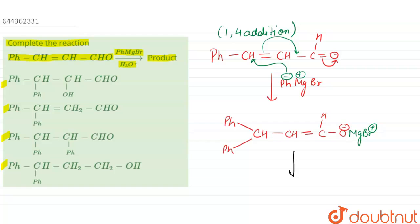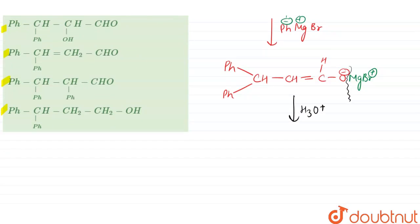Now acid hydrolysis will take place with H₃O⁺. In acid hydrolysis, the bond between O⁻ and MgBr will break, forming the product: Ph-C(Ph)(H)-CH=C(OH)(H), which is in enol form.